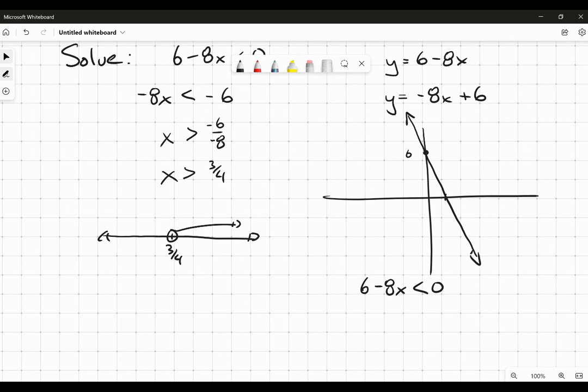So I'm interested in where 6 minus 8x is less than 0. And because of the substitution that I made up here, what I'm really saying is I'm interested in where y is less than 0. In other words, I am interested in where this graph enters either quadrants three or four, because that's where the y-coordinate is less than 0.